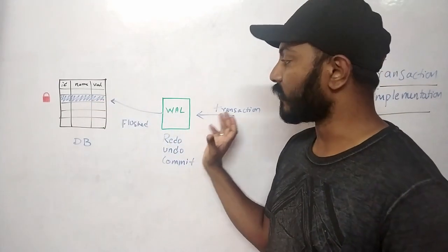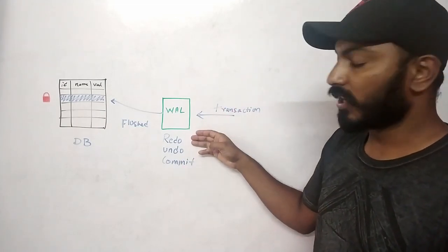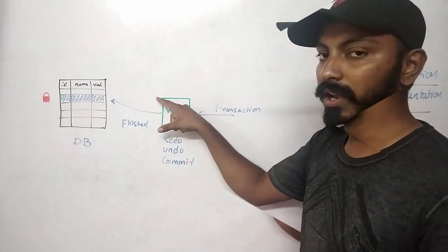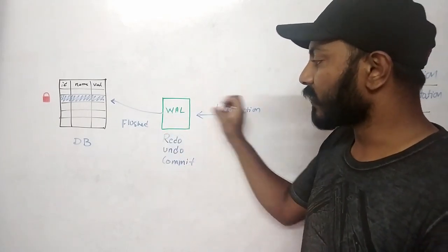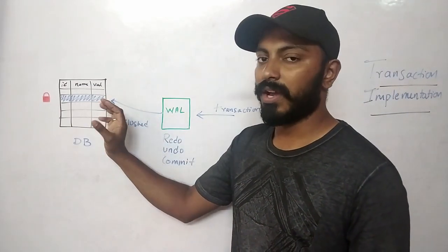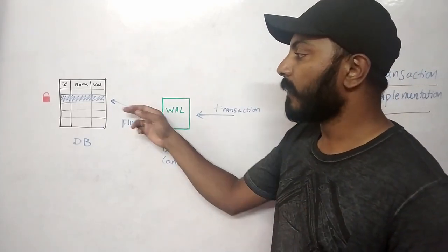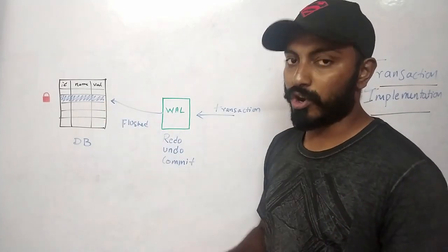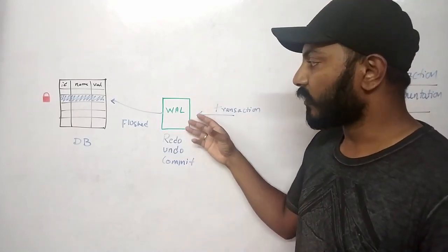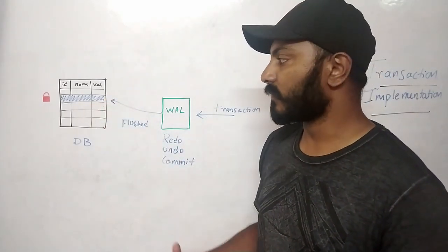Once transaction queries hit the WAL, all queries including redo, undo, and commit-related information are recorded into the WAL file, which is an in-memory storage. Once everything is committed, all the content in the WAL is flushed back to the actual database. While the transaction is happening, the row is locked but the data is not modified until the single unit of work has executed properly. Once executed, the modifiable data is pushed to the database to persist.